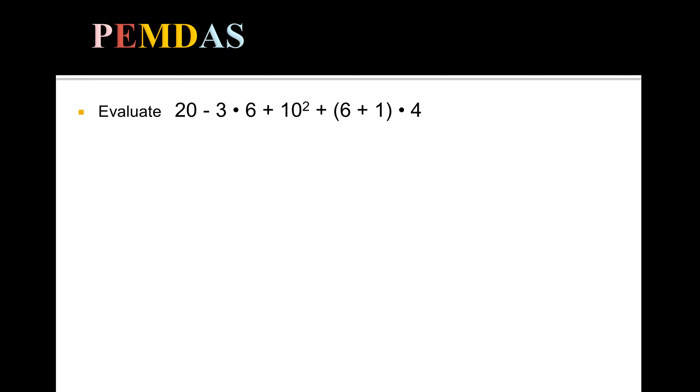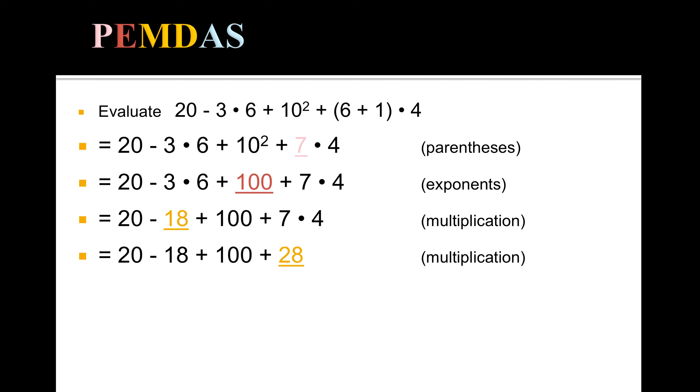For this next one, if you want, you could pause the video right here, copy this down, and try to solve it on your own. I'm just going to quickly go through the steps so you can see the final answer: parentheses, exponents, multiplication, multiplication, subtraction first because it comes before addition in the expression, then addition. The final answer would be 30.